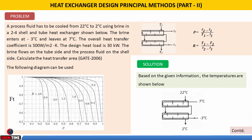Coming to the gate problem. A process fluid has to be cooled from 22°C to 2°C using brine in a 2-4 shell and tube heat exchanger. The brine enters at −3°C and leaves at 7°C. The overall heat transfer coefficient is 500 W/m²·K. The design heat load is 30 kW. The brine flows on the tube side and the process fluid on the shell side.